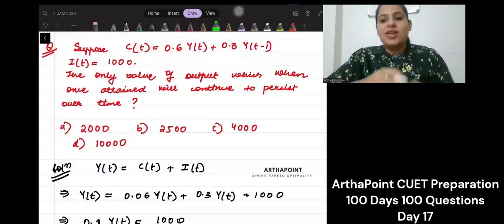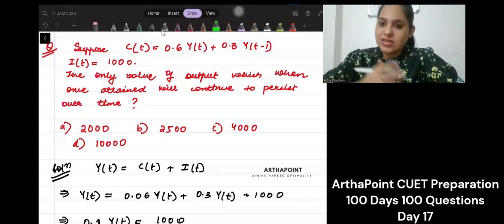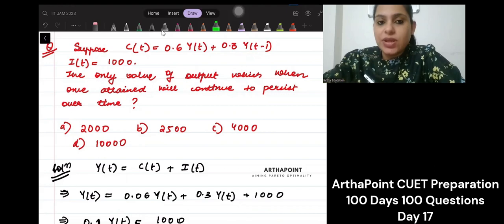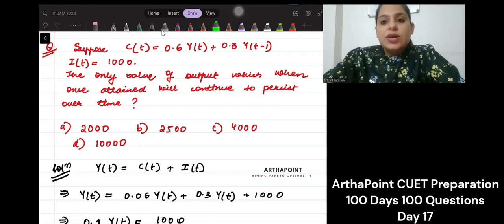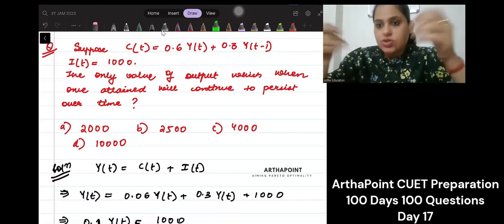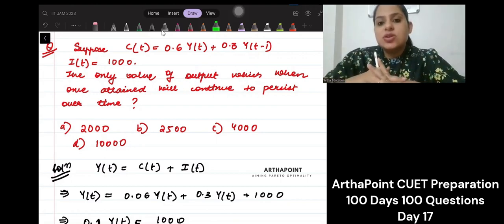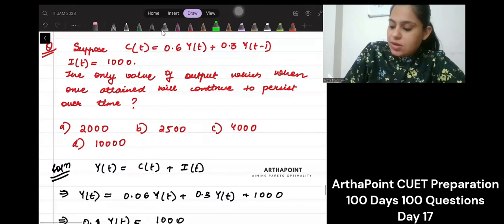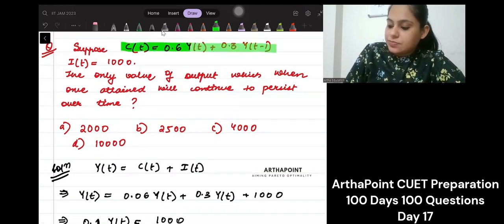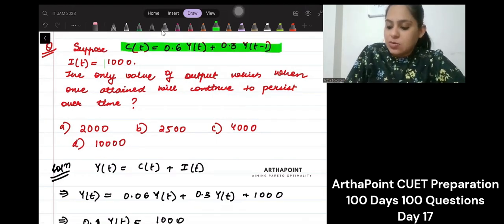Hello everyone, welcome to the next day of our CUET series that we are doing. Let us go ahead and look at this question. So it says suppose that you are given this equation. Consumption is 0.6Y(t) plus 0.6Y(t-1), your consumption equation is. And then it says investment is 1000.